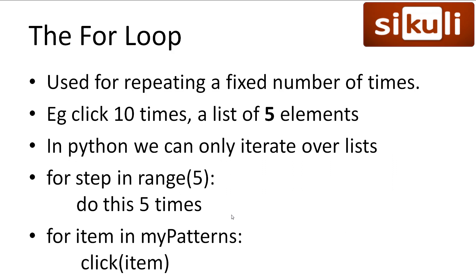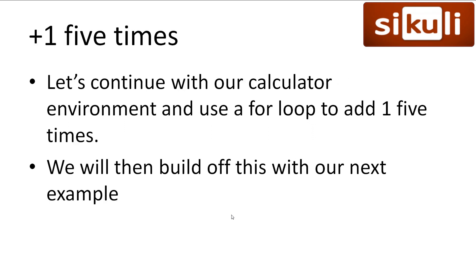The for loop is used to repeat code a specific number of times — either a set number like 5, or all the items in a list. In these two examples we first repeat some tasks 5 times, and in the second we click each pattern in the list. Let's continue with our calculator automation and create a script that adds 1 five times using a for loop, which we'll modify further in the next example.